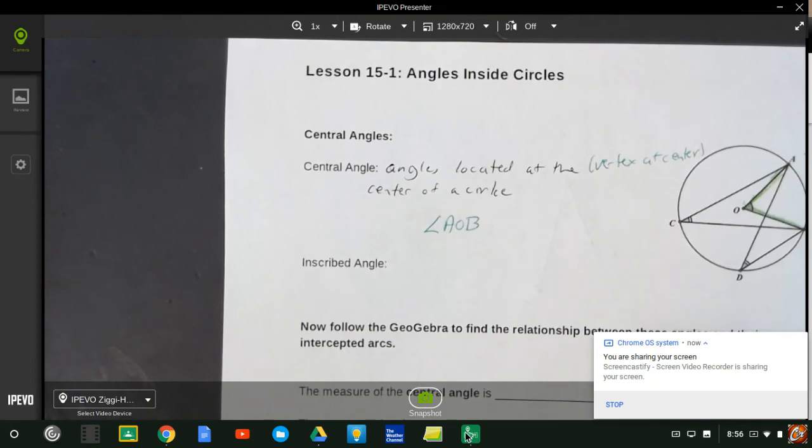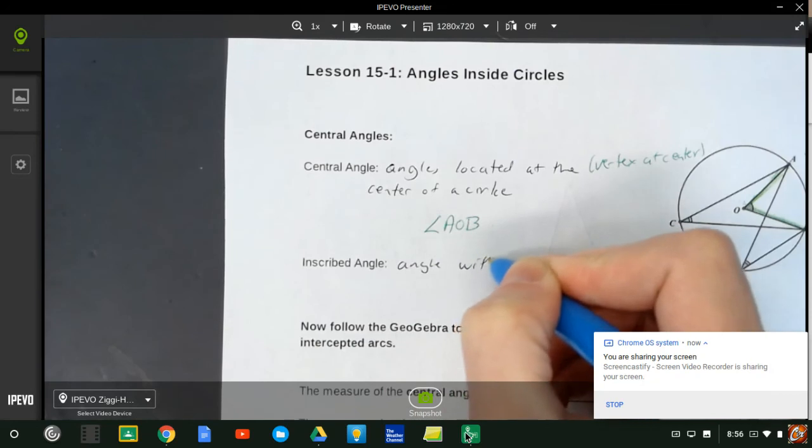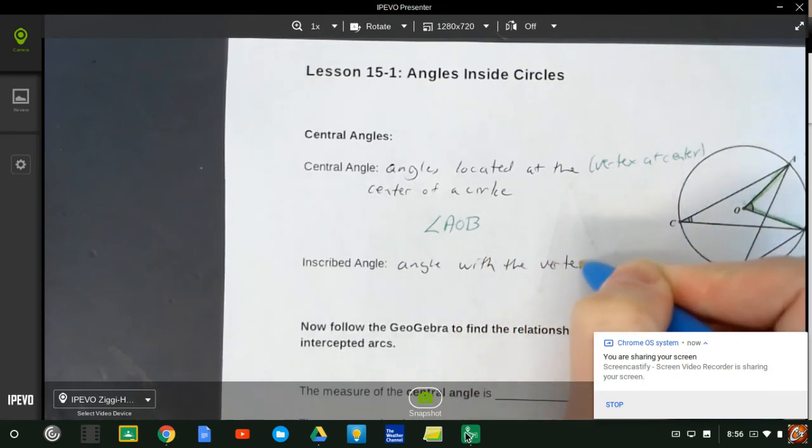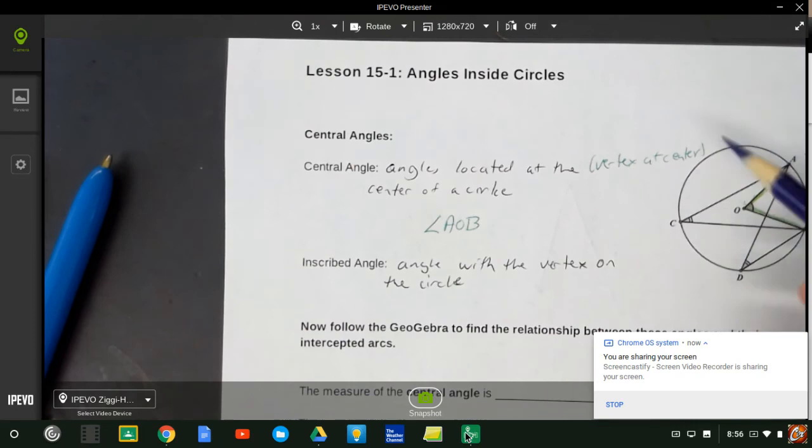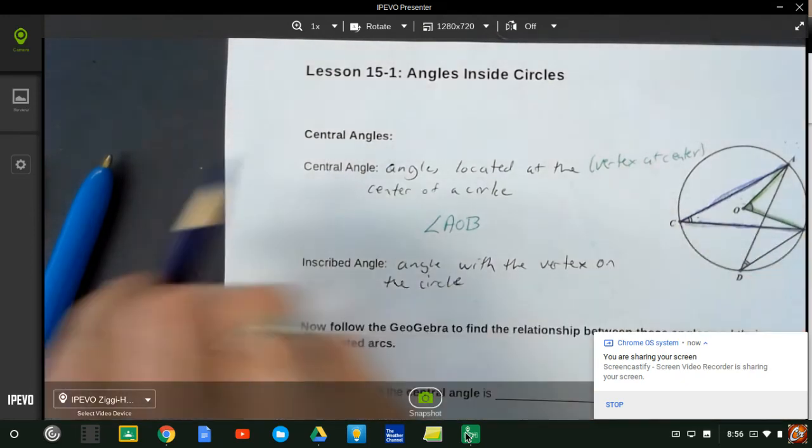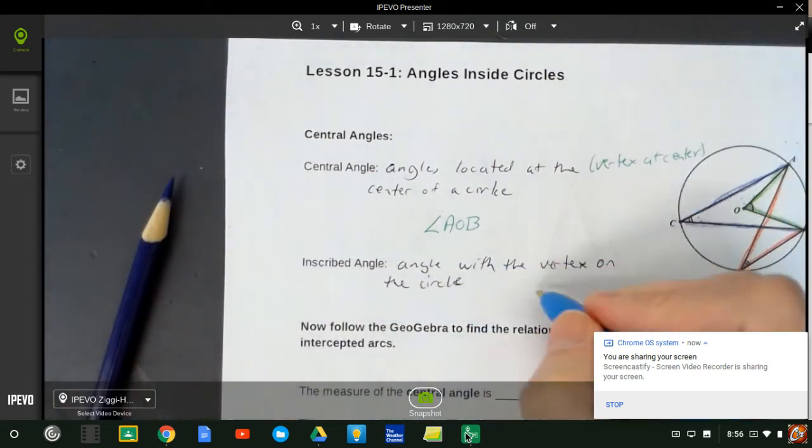Now another type of angle we have is what's called an inscribed angle. An inscribed angle is an angle with the vertex on the circle. So we've got a couple central angles. I've got angle ACB is a central angle. Because its vertex is actually on the circle at C. I can also say the same thing with ADB. Its vertex is on the circle. So those are two inscribed angles. Angle ACB and angle ADB.